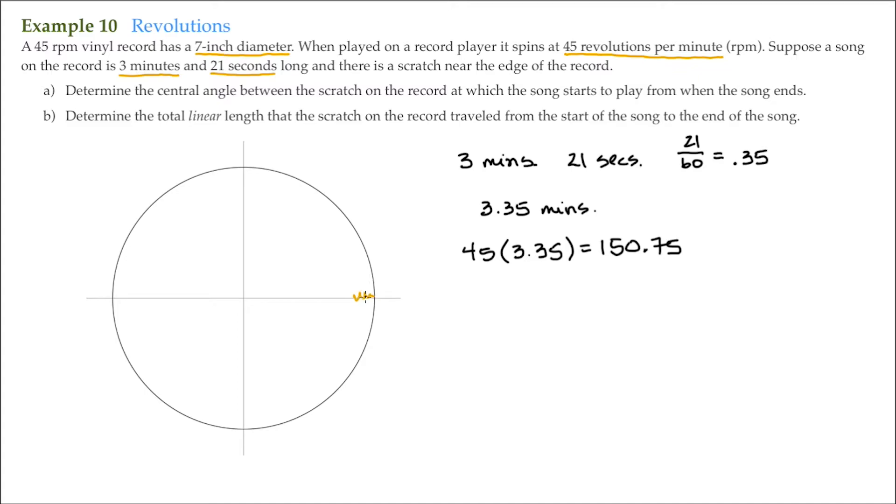So the scratch right here, after 150 spins, it ends up at the same spot. But then it goes around 0.75 more of a spin. So the scratch ends up down here. So determine the central angle between the scratch on the record at which the song starts to play from when the song ends.